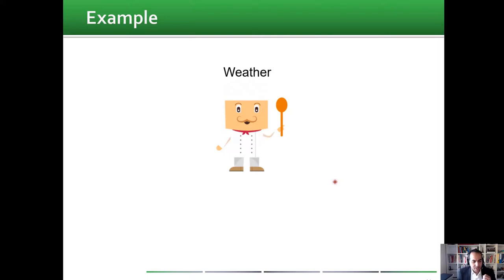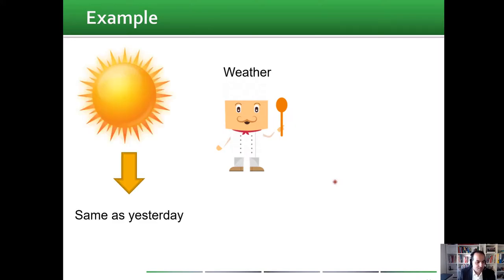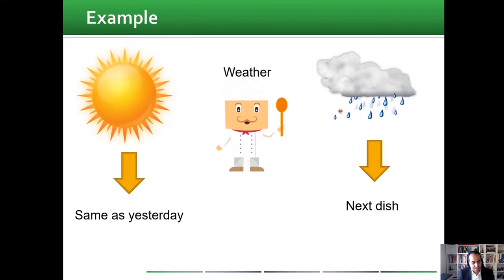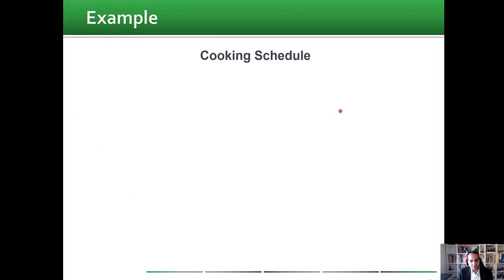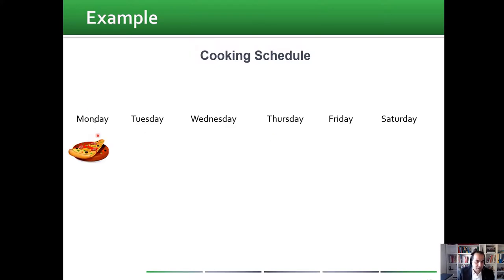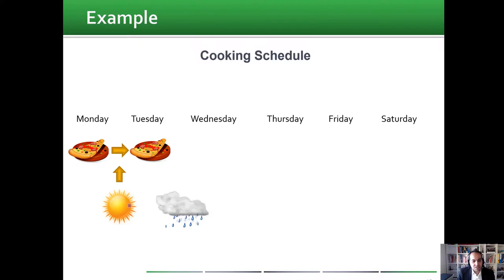Now let's go for a slightly more complicated problem: we add another condition — the weather. We have a cooking schedule, but the meal also depends on the weather. If the weather is sunny, today's food is the same as yesterday. If the weather is rainy, we move to the next dish. For example, Monday we have pizza; Tuesday is sunny so we keep pizza; Wednesday is rainy so we move to the next meal, and so on.